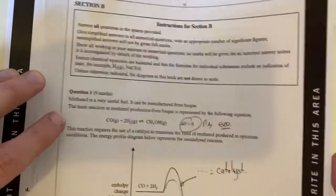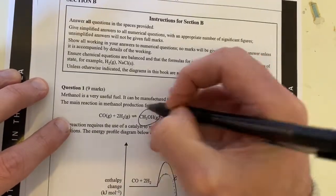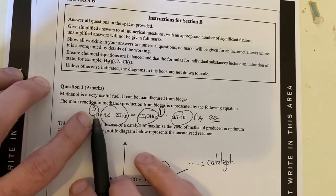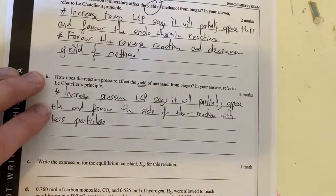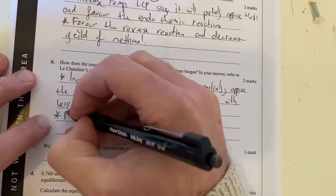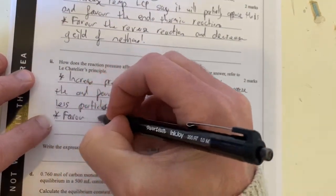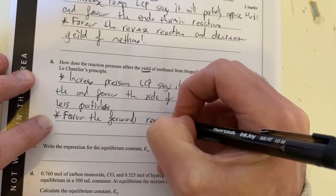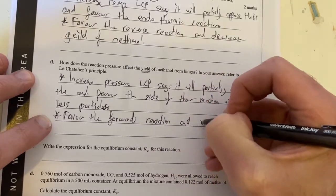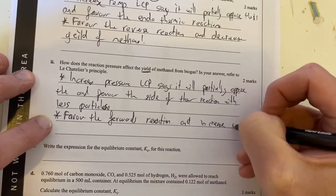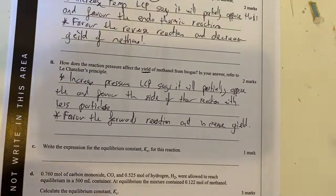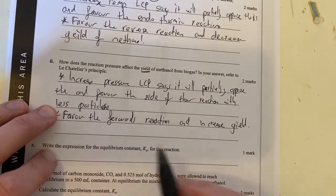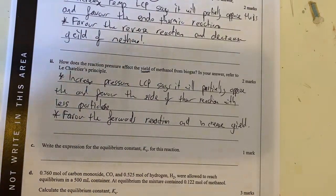So let's have a look at my reaction here. Over here, I've got one particle. Over here, I've got three particles. So what that means is my increase in pressure is going to push this reaction forwards. So therefore, it would favour the forwards reaction, and increase yield, because we're producing more products. I'm talking about Le Chatelier's principle, and I think I've covered all the things for those two questions there.